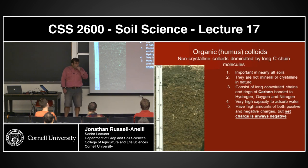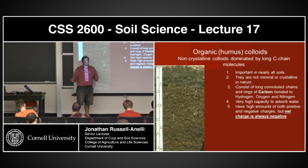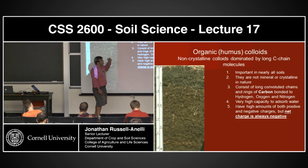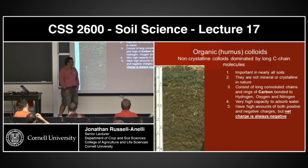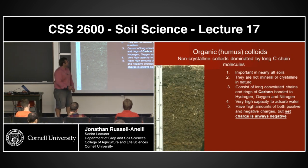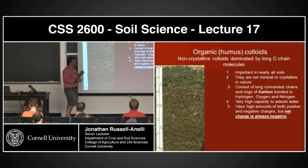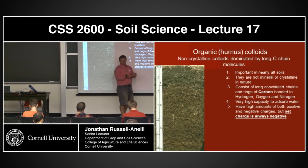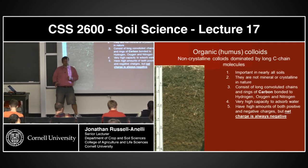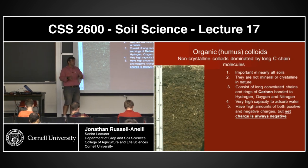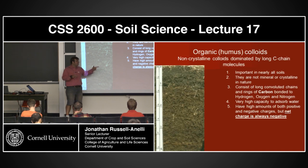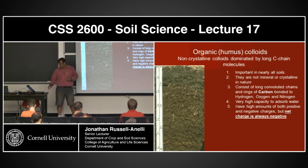The next colloid: organic humic colloids — organic molecules. They're important in nearly all soils. They are not mineral and not crystalline — they're organic. They consist primarily of long, convoluted chains and rings of carbon structure, bonded with hydrogen, oxygen, and nitrogen, as well as other nutrients. They have a very high capacity to absorb water, and they have high amounts of both positive and negative charges, though their permanent charge is always net negative.